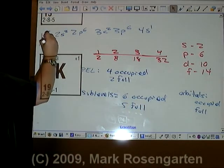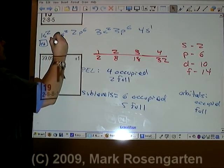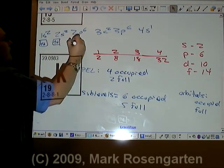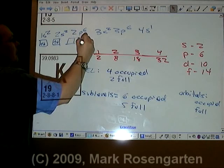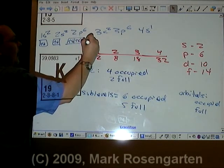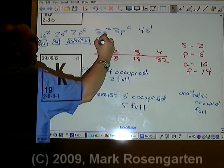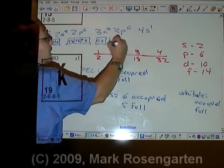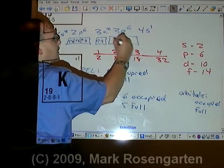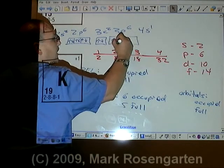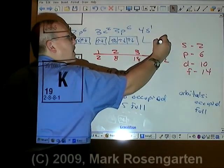Orbitals. 1s up-down, 2s up-down, 2p up, up, up, down, down, down. 3s up-down, 3p up, up, up, down, down, down, and 4s up.